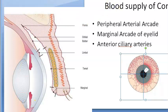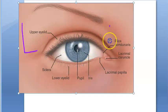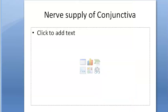The lymphatics from the lateral side drain into the preauricular lymph nodes, and those from the medial side drain into the submandibular lymph nodes. So: lateral side goes to preauricular lymph nodes, medial side goes to submandibular lymph nodes. In the next video, we will look at the nerve supply of conjunctiva.